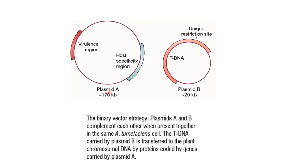In the binary vector strategy, Plasmid A and Plasmid B are both present in the same Agrobacterium tumefaciens cells. The T-DNA transfer into the plant chromosomal DNA is encoded by proteins from Plasmid A. This T-DNA now has unique restriction sites and will be used for the insertion of the desired gene.